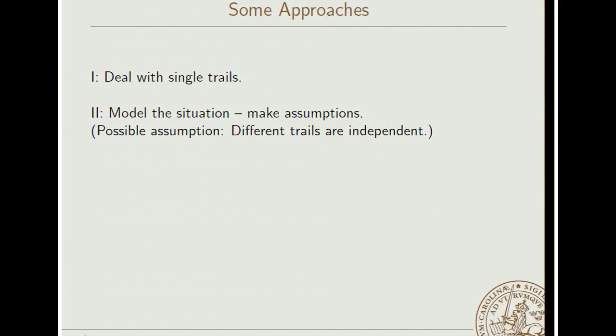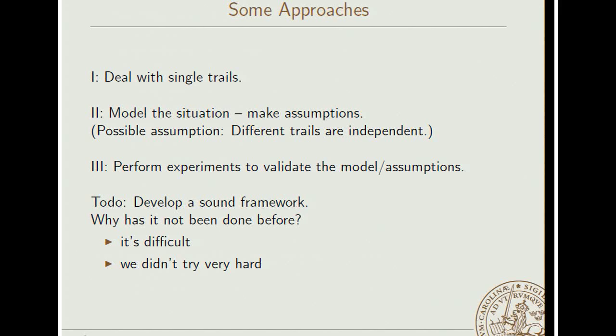We can model the situation somehow. For example, assuming that all of these trails are independent. So this sum of trails is a sum of a lot of independent stuff, and that's usually easy to handle. So we might reach some conclusion there. If we are even more advanced, we might perform simulations to somehow verify the result of this modeling. This is usually difficult in a computational sense. So one studies a smaller state version of the block cipher. And then, of course, the question is, these simulation results, are they at all valid when we consider the actual block cipher with a larger state? So on the to-do list of the community is to develop a reasonable framework for studying this. And we claim that it hasn't been done before. It's difficult, sure. And we also think that we didn't really try very hard so far.